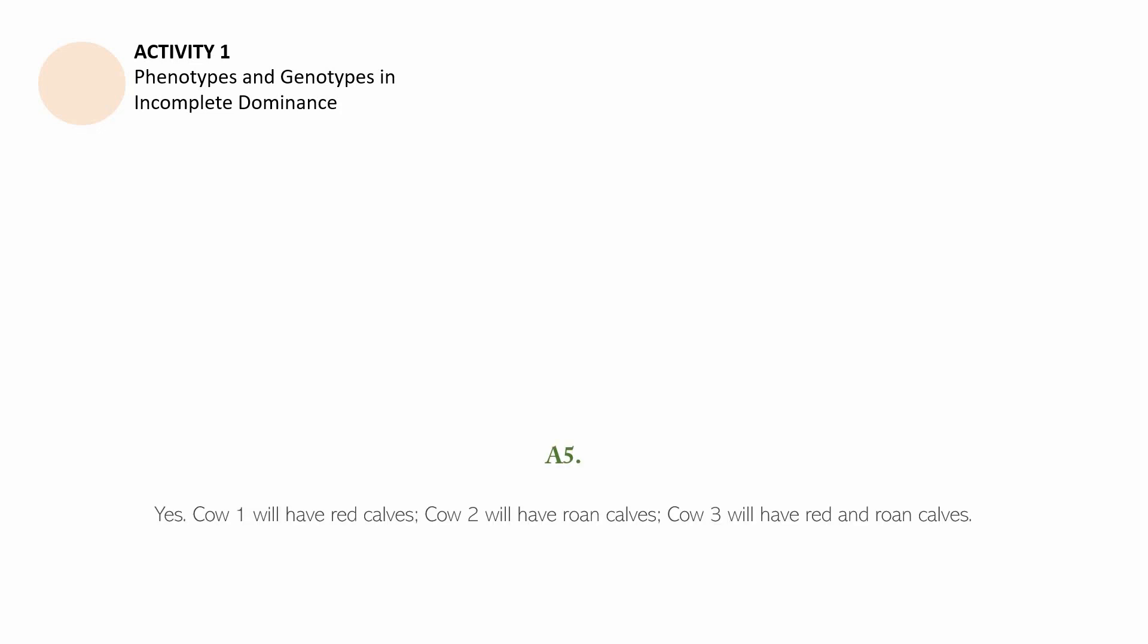The answer to question number five is yes. Cow one will have red calves. Cow two will have Roan calves. Cow three will have red and Roan calves. Answer to question number six is yes.